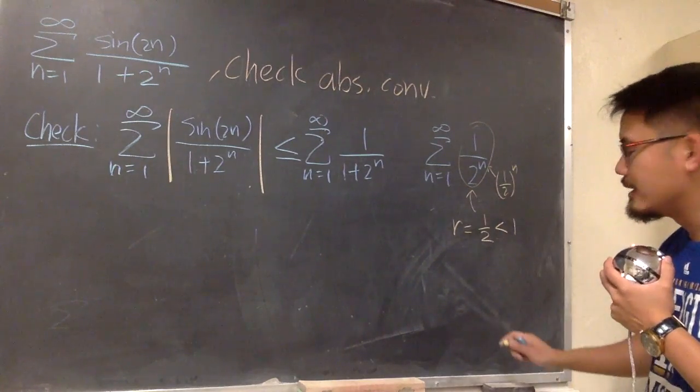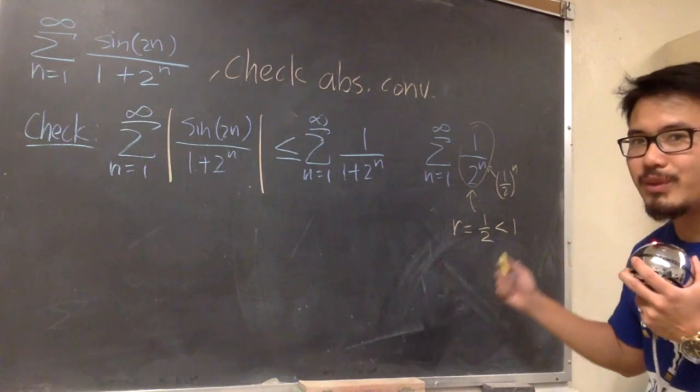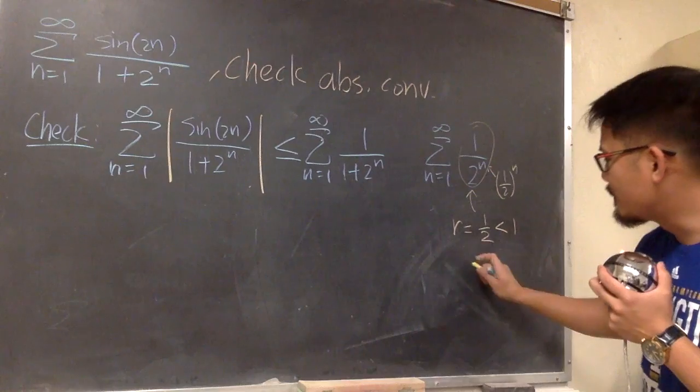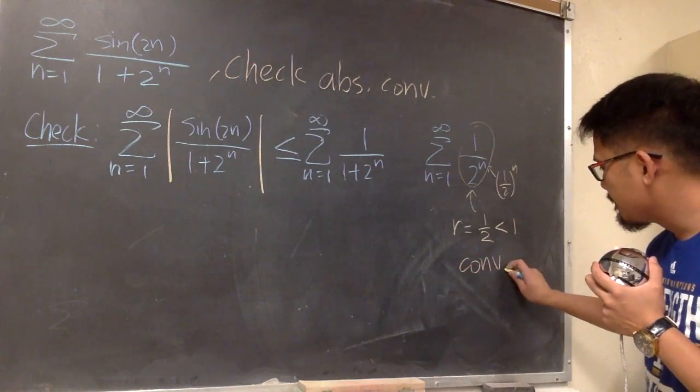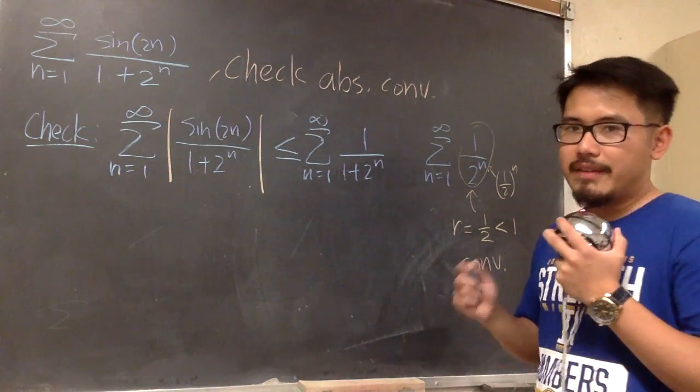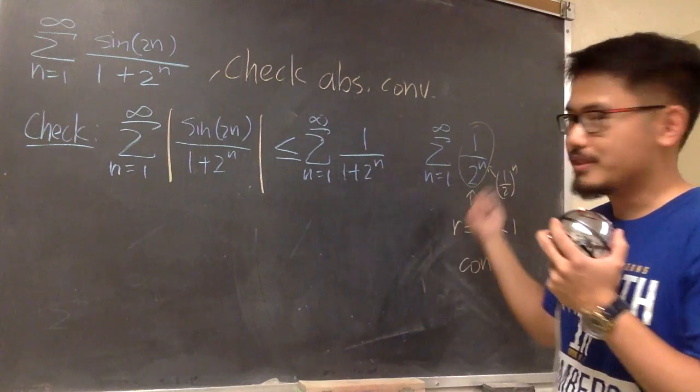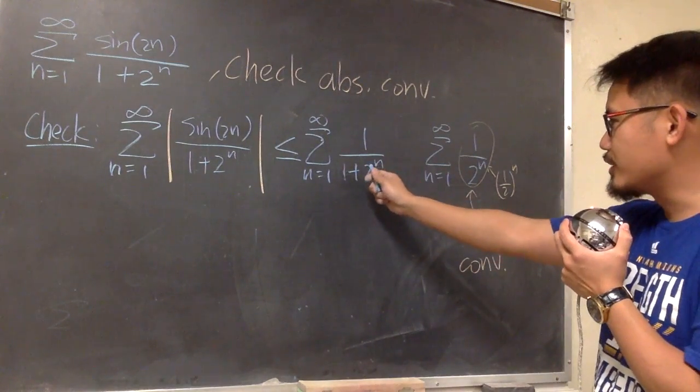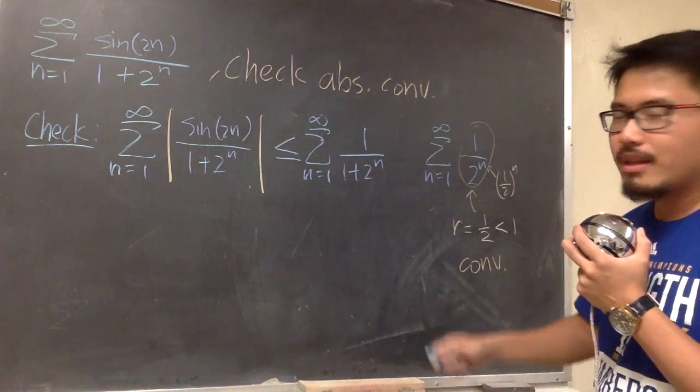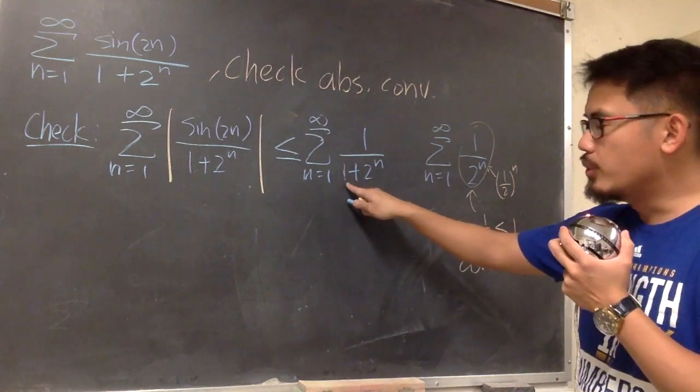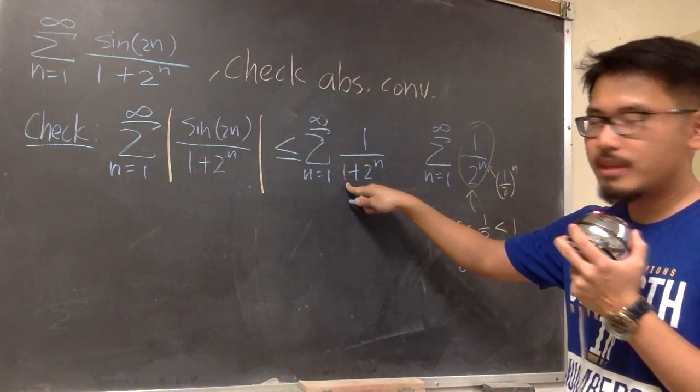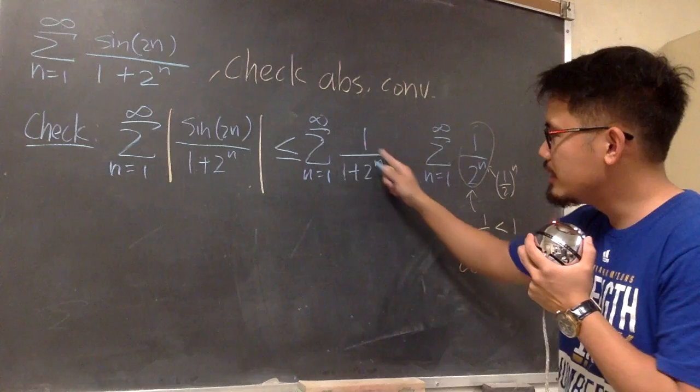Well, 1 half is less than 1. And from the geometric series, we know this converges. All right, and now let's talk about what good does this do. Can we build any connection between this one and that one? The only thing different is that we took away the 1 in the denominator.